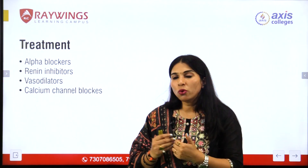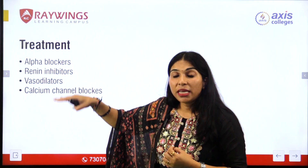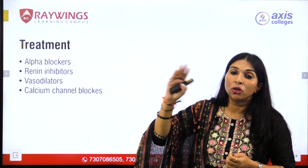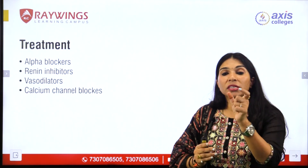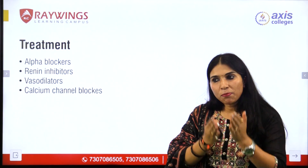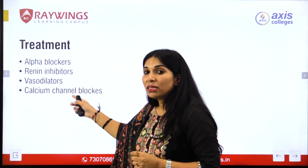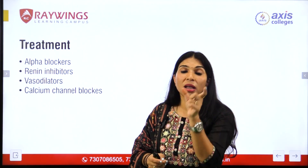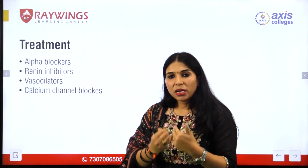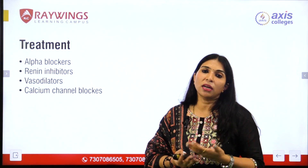If lifestyle changes are not sufficient, we can go for medication such as alpha blockers, renin inhibitors — which prevent renin from triggering the angiotensin 1 to angiotensin 2 conversion, thereby preventing aldosterone production, vessel constriction, and sodium-water retention, restoring proper blood flow. Vasodilators expand the blood vessels, increasing space so blood pressure drops automatically. Calcium channel blockers are also used. These are the ways to treat the condition of hypertension.